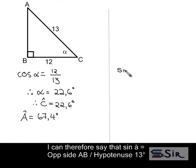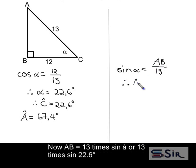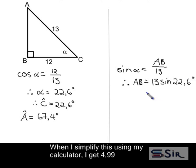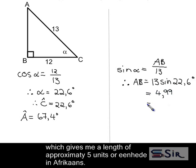I can therefore say that sin of alpha equals the opposite side AB divided by the hypotenuse of 13. This means that AB equals 13 times sin alpha or 13 times sin of 22.6 degrees. When I simplify this using my calculator, I get 4.99, which gives me a length of approximately 5 units.